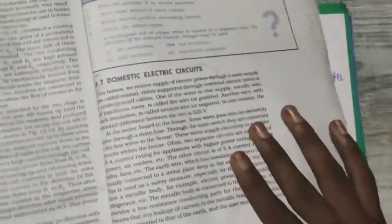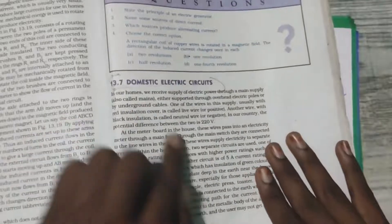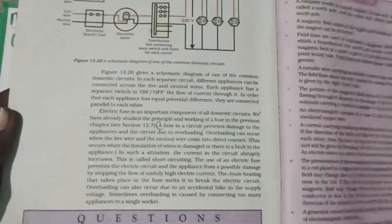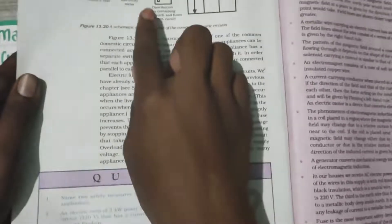The last topic is domestic electric circuit. This is also not there for your exam. This last page, page number 238, is also not there for your exam.